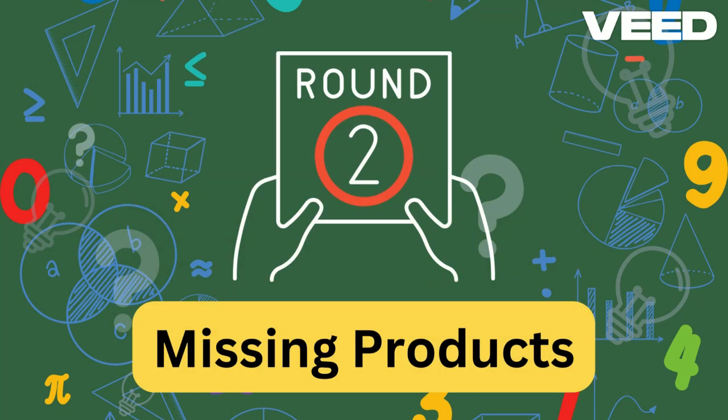Round 2, missing products. You will see the multiplication, but the answer, the product, is missing.